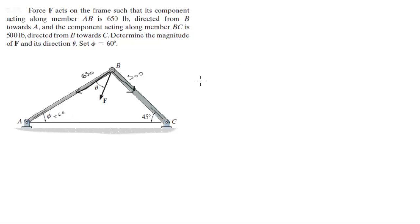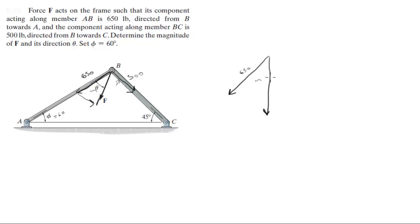We're going to form a triangle by moving this vector over here to form a parallelogram, then use this triangle. So this side is 650, this is the force — let me make the angle like it is — and this is the 500 force.